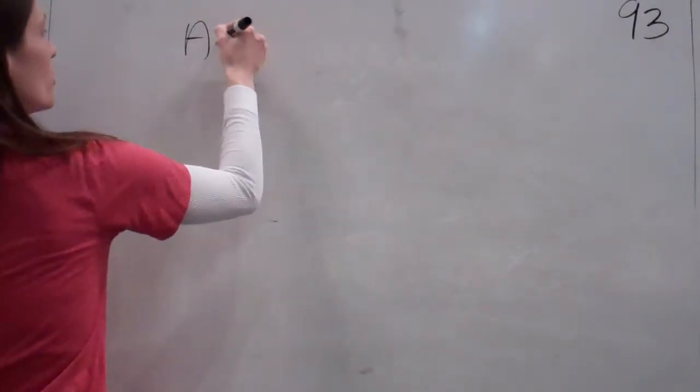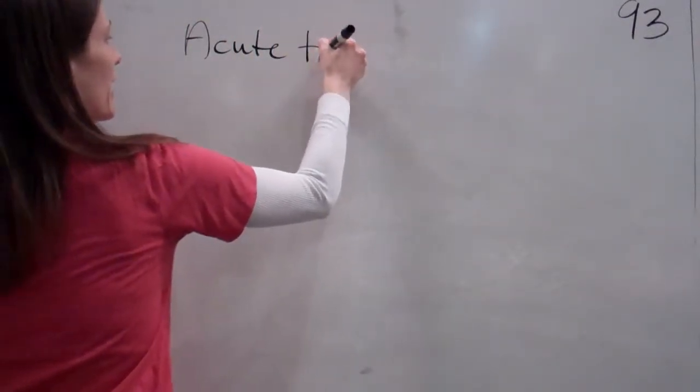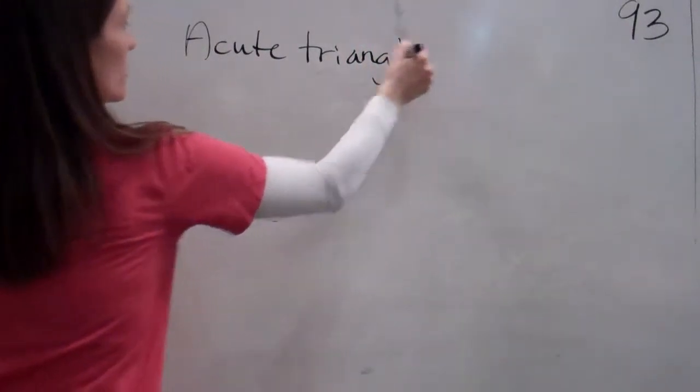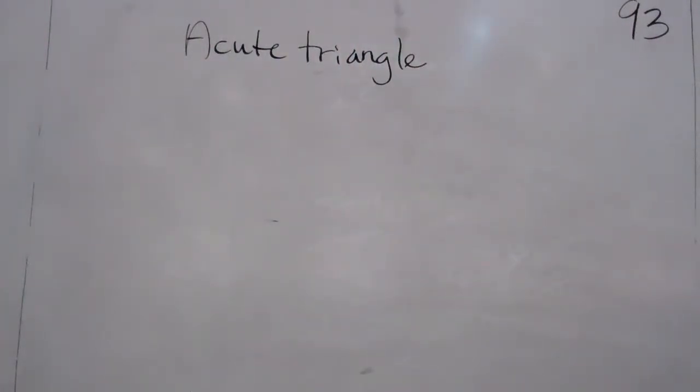Okay. Um, what does an acute triangle mean? Acute. Um, one. Yes, Esther? A triangle that is like below 90 degrees. Yes.